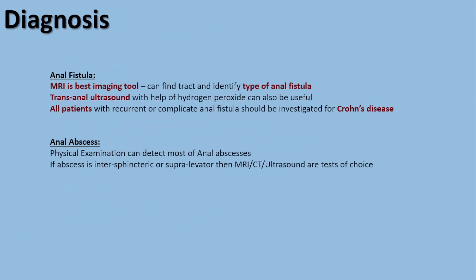For diagnosis of anal abscess, most abscesses can be found with physical examination alone, since most are perianal. If the location is inter-sphincteric or supra-levator, MRI, CT, or ultrasound can be used. For anal fistula, MRI is the best test to identify the tract and type of fistula. Trans-anal ultrasound using hydrogen peroxide can also help identify the tract. All patients with recurrent or complicated anal fistula should be investigated for Crohn's disease.